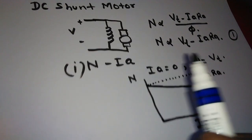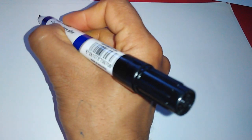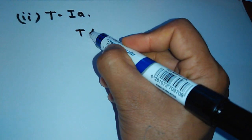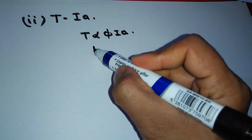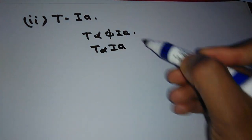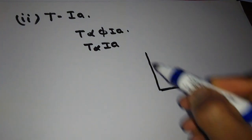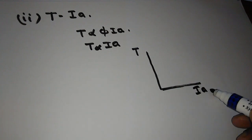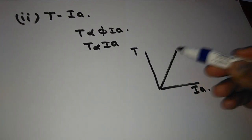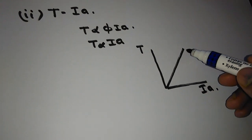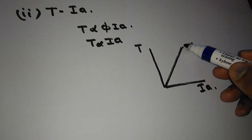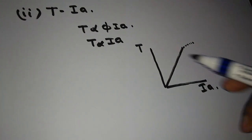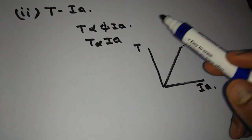Now we will see the next characteristic of DC shunt motor — torque versus armature current. We know that torque is proportional to phi times Ia. In the shunt motor, phi is constant, so we can assume T is proportional to Ia, giving a straight line with T on the y-axis and Ia on the x-axis. But after some point, due to armature reaction, the torque is reduced, causing a slight bend in the curve.